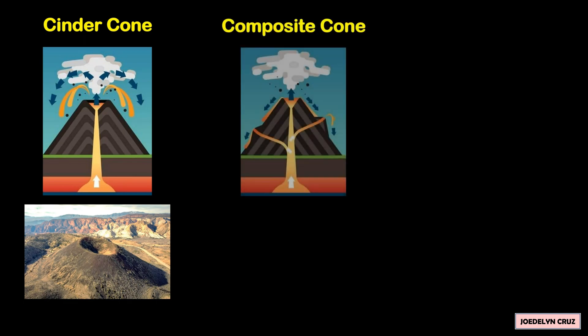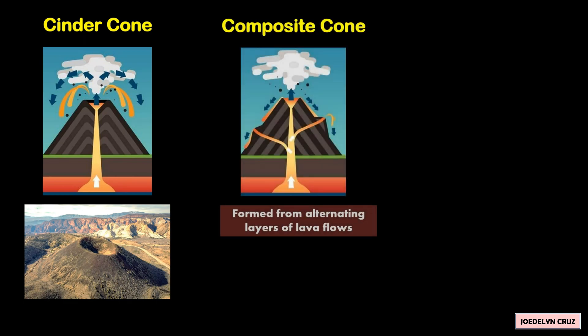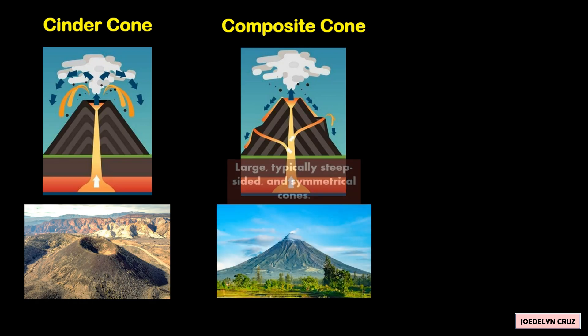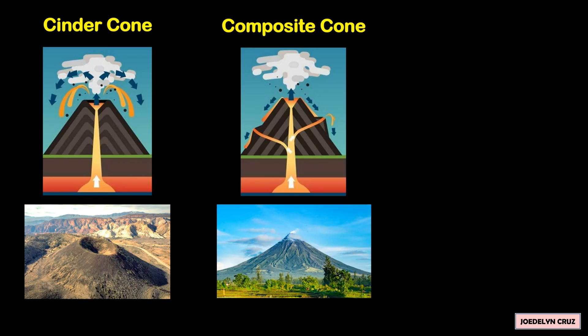On the other hand, composite volcanoes are formed from alternating layers of lava flows. They are large, typically steep-sided and symmetrical cones.